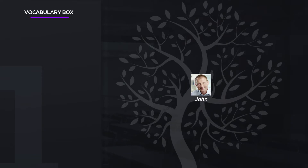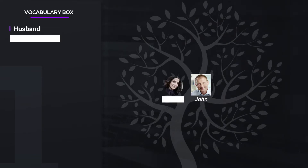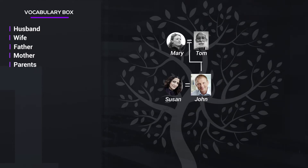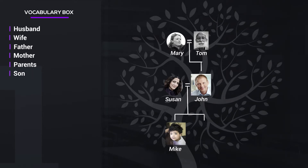Here is John. John is Susan's husband. Susan is John's wife. Tom is John's father. Mary is John's mother. Tom and Mary are John's parents. This is Mike. Mike is John's son. This is Melanie. Melanie is John's daughter.